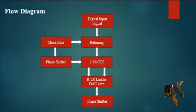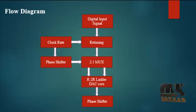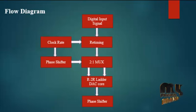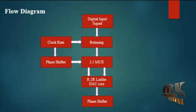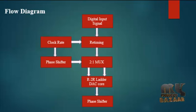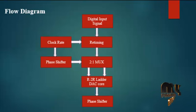In the multiplexing block, the input comes from the retiming stage and the selection logic comes from the output of the phase shifter. The clock rate signal is applied to the phase shifter input. The phase shifter output is directly applied to the 2-1 multiplexing circuit. In this 2-1 multiplexing circuit block, we are using 6 different 2-1 multiplexers. The output of the 6 multiplexers is directly applied to the Digital to Analog Converter block.